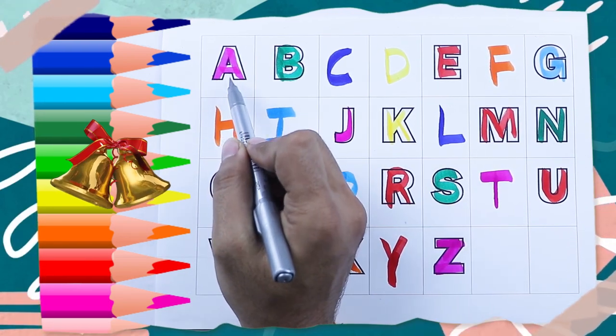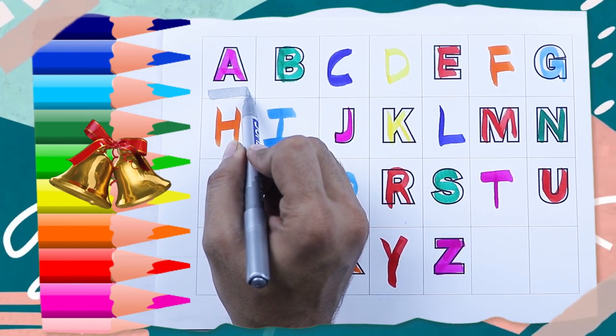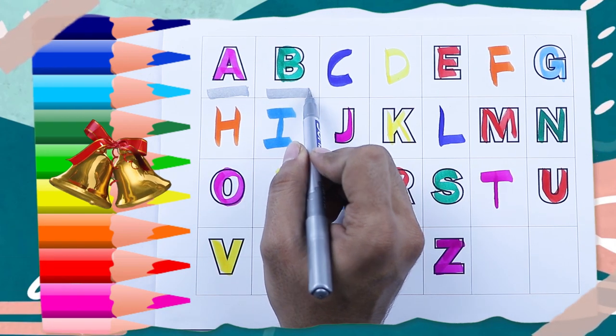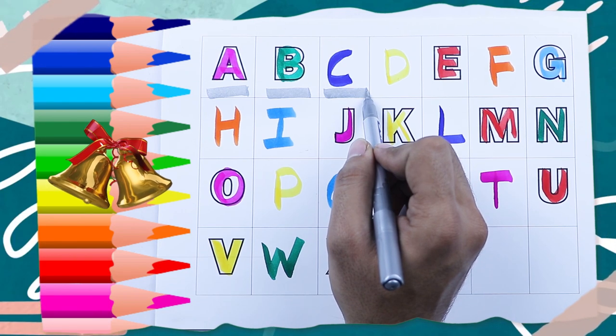Which color is this? Pink color. Pink color A. A for apple. B for ball. Green color B. Blue color C. C for cat.